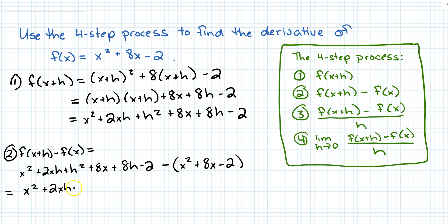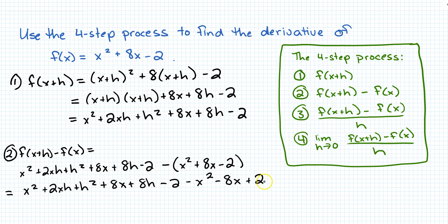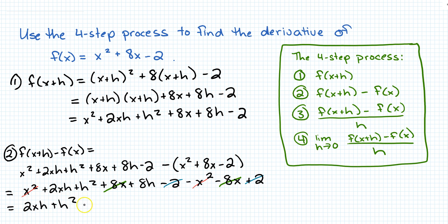Distributing that minus sign, I get x squared plus 2xh plus h squared plus 8x plus 8h minus 2, then negative x squared minus 8x, and minus times a minus gives plus 2. Now let's see what cancels — and if we're doing this right, a bunch will cancel. x squared minus x squared cancels, 8x minus 8x cancels, and minus 2 plus 2 cancels. That leaves me with 2xh plus h squared plus 8h.